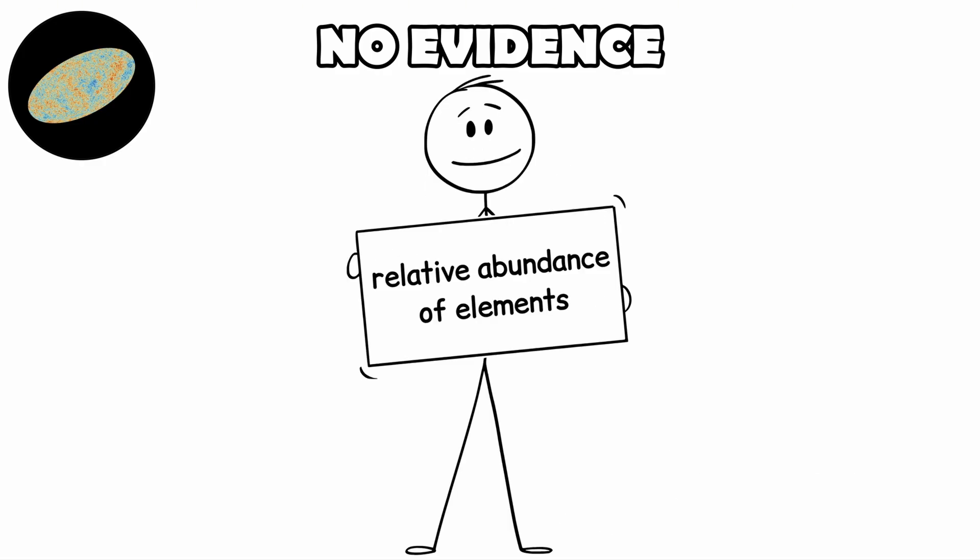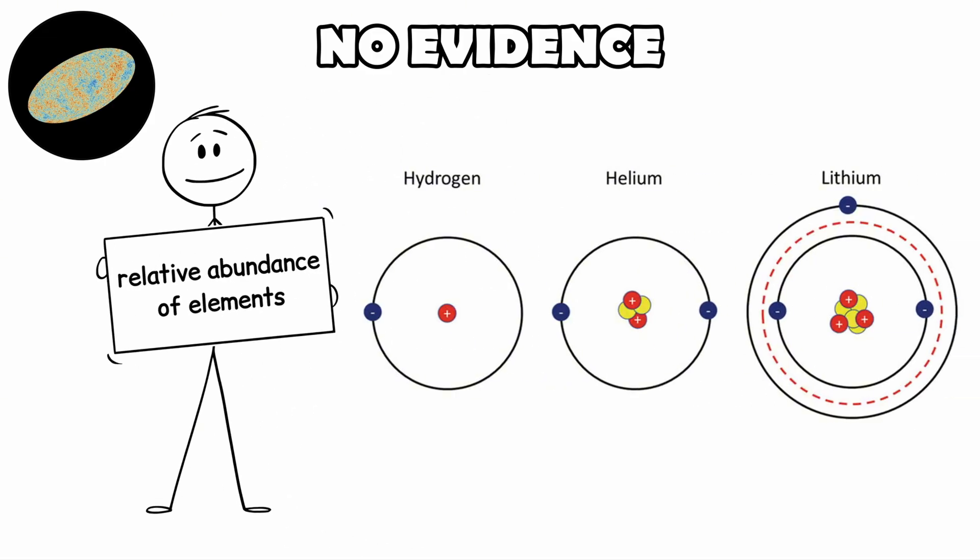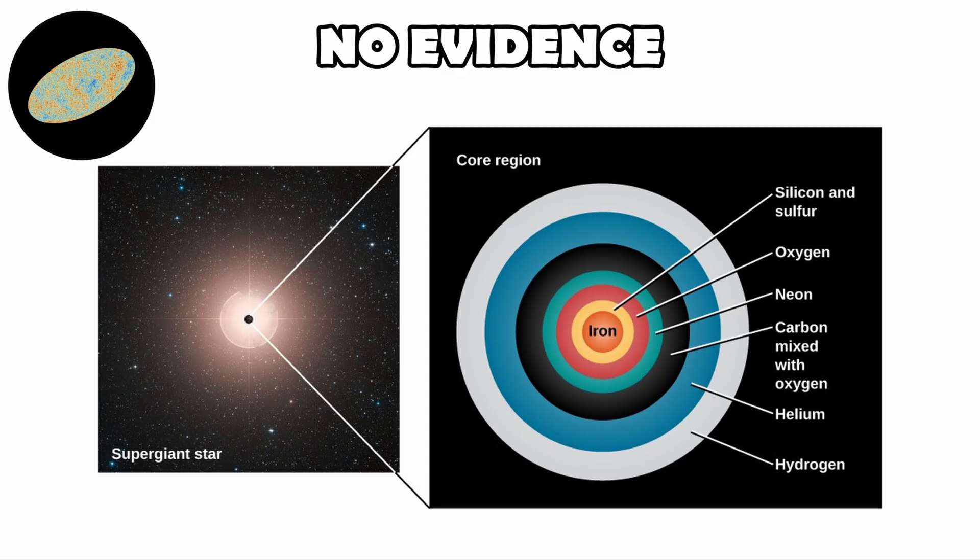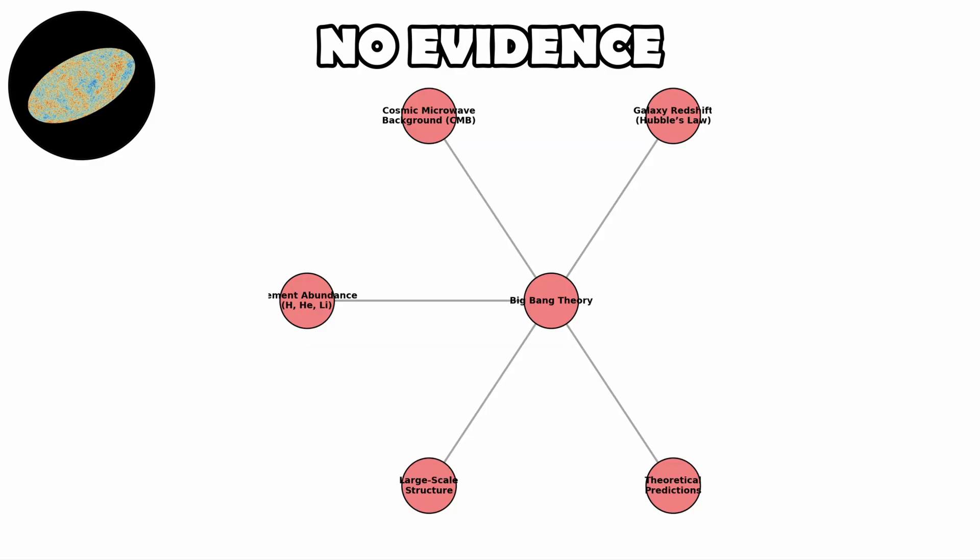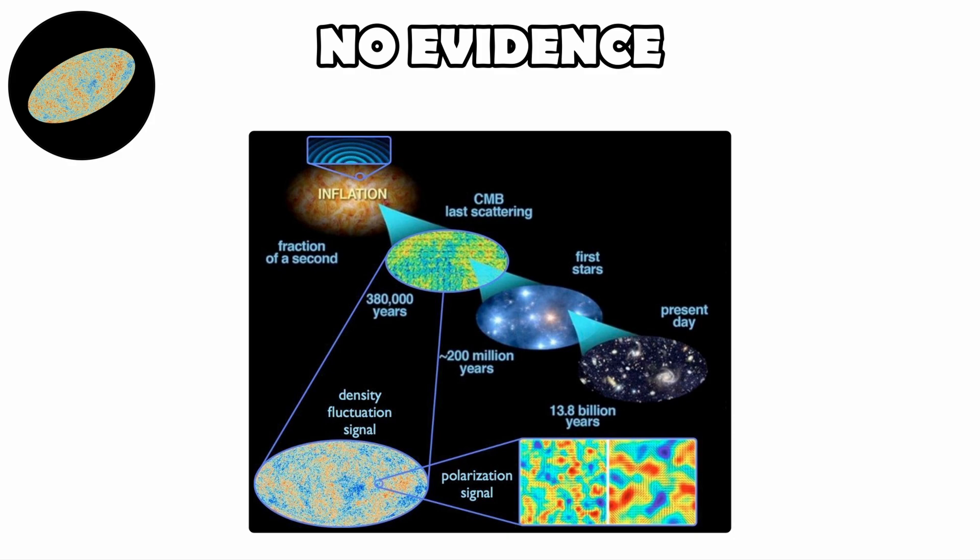The relative abundance of elements also confirms the model. Calculations of Big Bang nucleosynthesis precisely predict the amount of hydrogen, helium, and lithium that should exist. Observations of distant gas clouds and ancient stars show the same proportions. Taken together, these observations form a powerful web of evidence. The Big Bang is not a wild idea, it is a tested scientific framework with decades of confirmation from data.